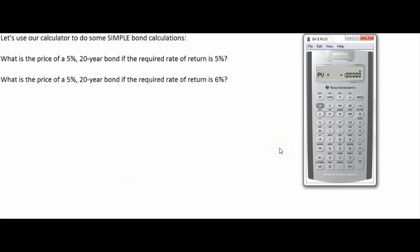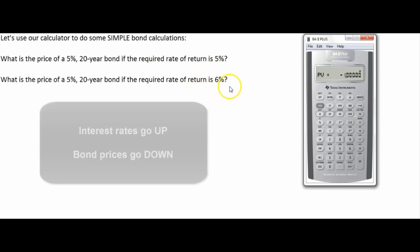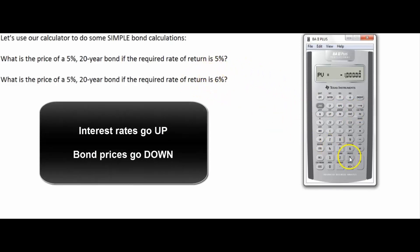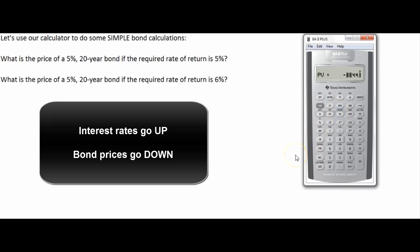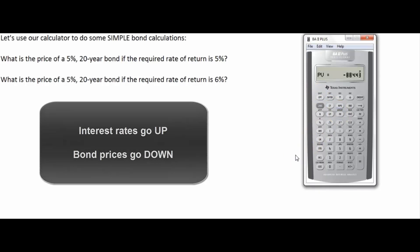What is the price of that five percent twenty-year bond if the required rate of return is six percent? Since everything is the same except the interest rate, we just plug in three as the new I (six percent divided by two). Interest rates go up, so bond prices go down. We compute PV and sure enough the bond has gone down to a price of $884.43.